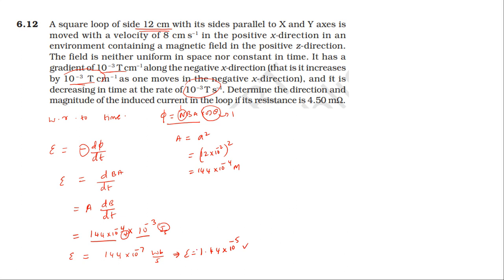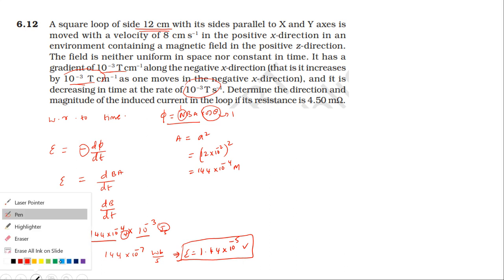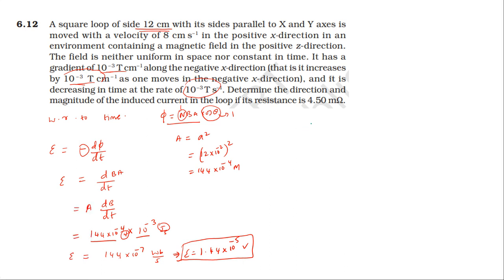The induced EMF from the time variation equals 1.44 into 10 power minus 5 volt. Now considering the distance component — the field decreases along the positive x direction, so with respect to distance, the induced EMF is minus dB by dt times the relevant factor.